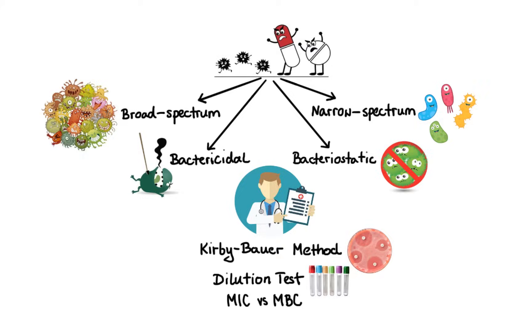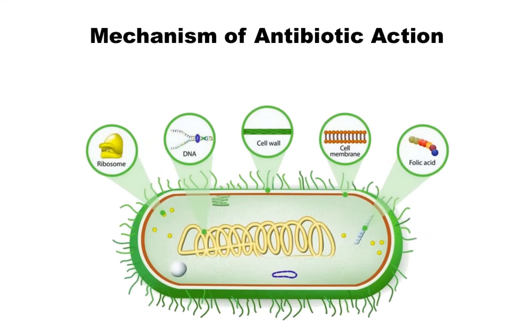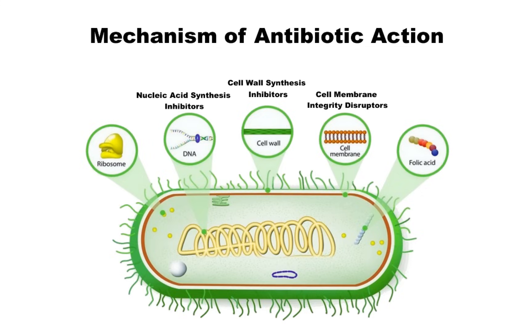Now let's dive a little deeper and take a closer look at how antibiotics work. Based on their mechanism of action, antibiotics can be divided into five broad categories: number one, cell wall synthesis inhibitors; number two, cell membrane integrity disruptors; number three, nucleic acid synthesis inhibitors; number four, protein synthesis inhibitors; and number five, metabolic pathway inhibitors.